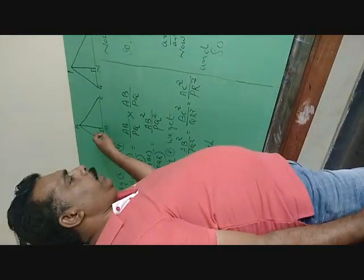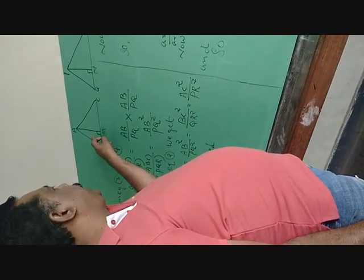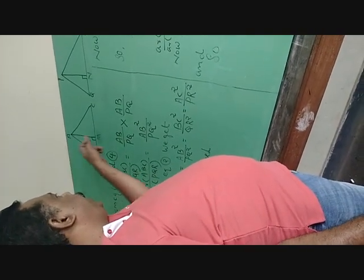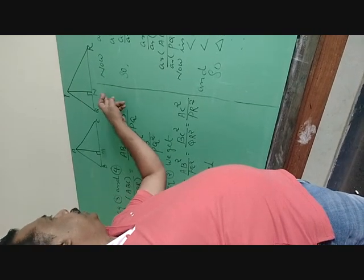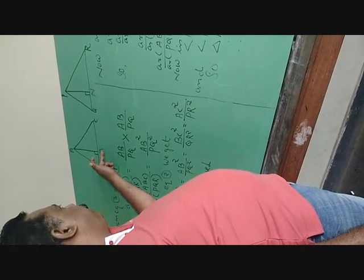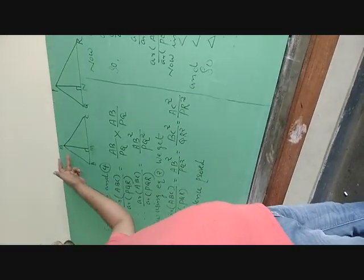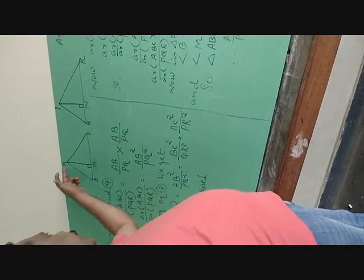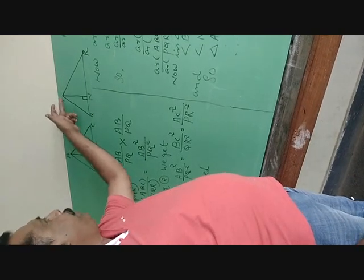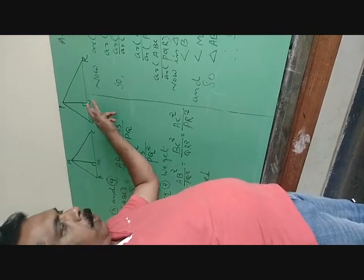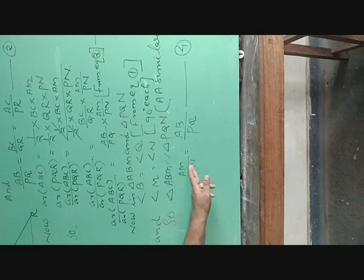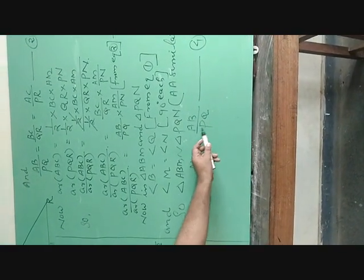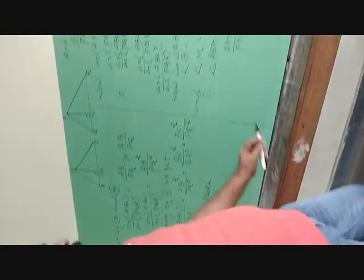In two similar triangles, the ratio of corresponding sides are equal. Therefore, AM by PN equals AB by PQ. This is equation number 4.